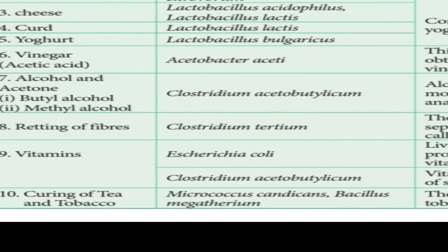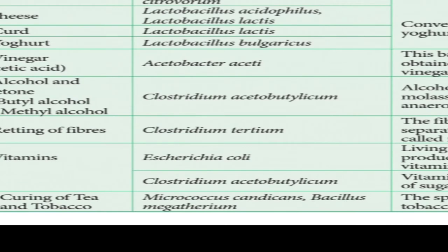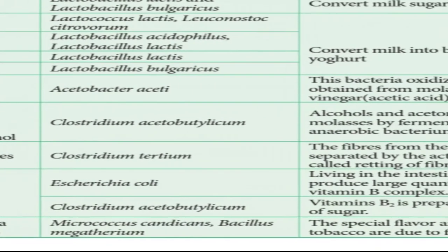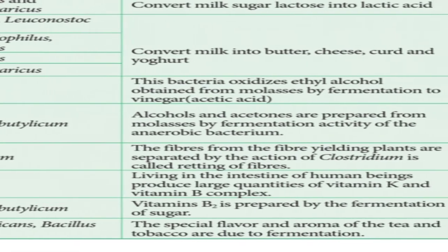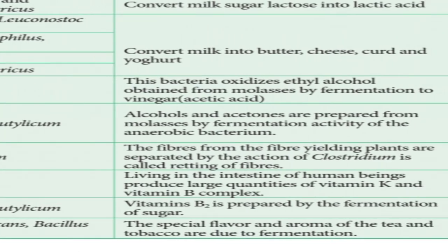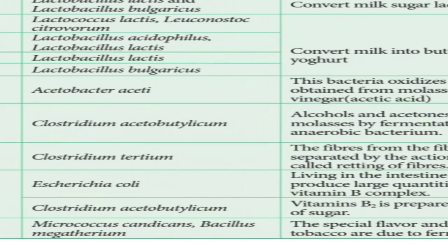Vinegar: acetic acid is taken from the bacteria Acetobacter aceti. It oxidizes ethyl alcohol from molasses — molasses is the fermentation product of sugar. Through fermentation, ethyl alcohol is obtained from molasses, and with the help of Acetobacter aceti, it is converted into vinegar.